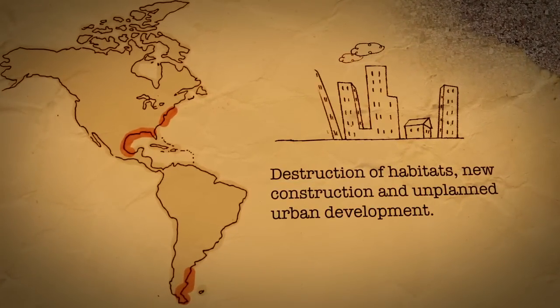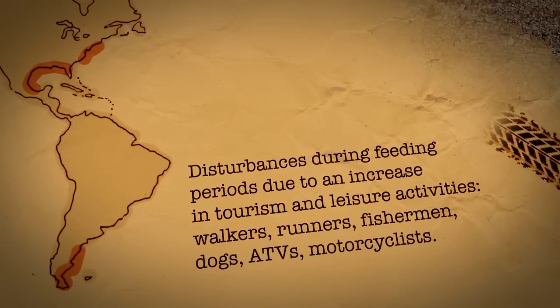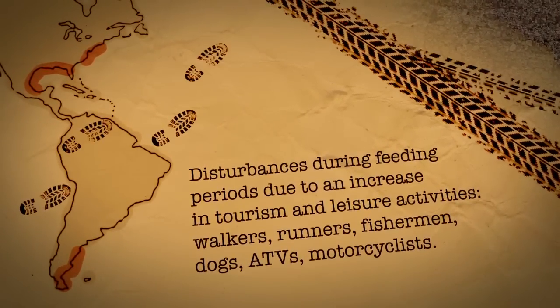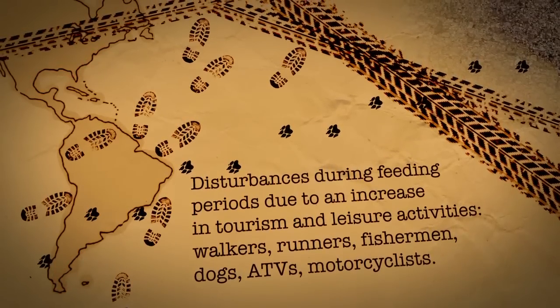Urban and tourist developments near Red Knot Rufa habitat have been a major source of disturbance. These disruptions can prevent the bird from feeding properly, in order to gain the necessary fat reserves to survive its long migration.